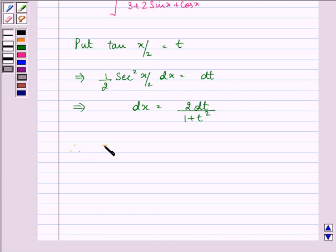So therefore we have I equal to integral in place of dx we have 2 dt divided by 1 plus t square upon 3 plus 2 into sin x. So now sin x can be written as 2t upon 1 plus t square. Plus cos x can be written as 1 minus t square upon 1 plus t square.